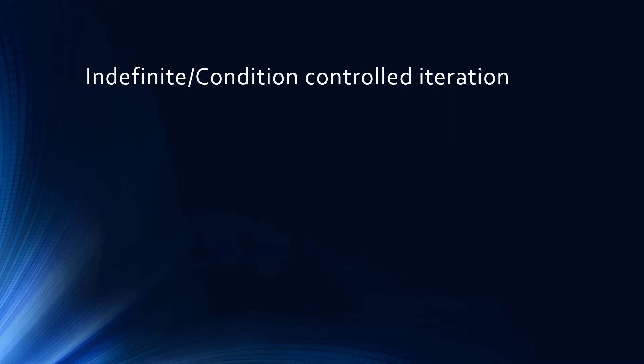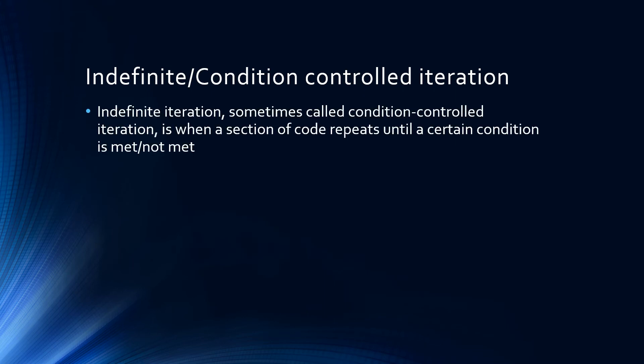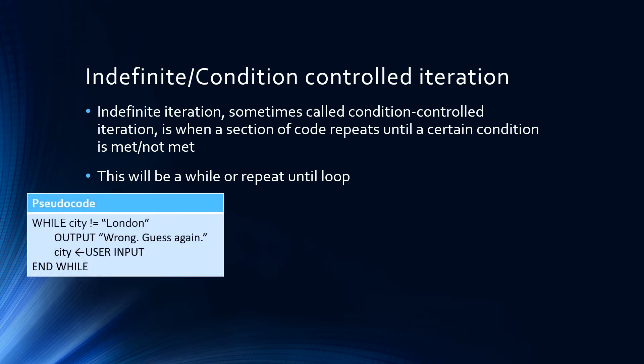Indefinite, or condition controlled, iteration is when a section of code repeats until a certain condition is met or not met. It depends how we set up the boolean check when we create our loop. Indefinite iteration can be achieved using either a while or a repeat until loop. Notice the structure of our while loop pseudocode. We have a boolean condition. The code that we want to be executed is indented. And once again, we use end while so that we can encase the while loop and show that it has ended in our algorithm.